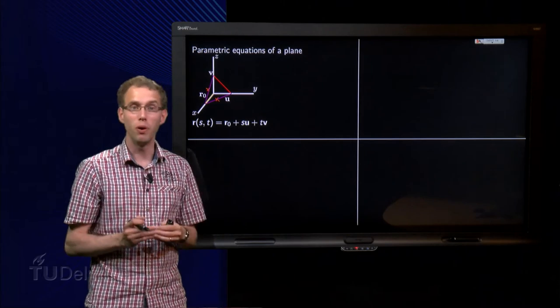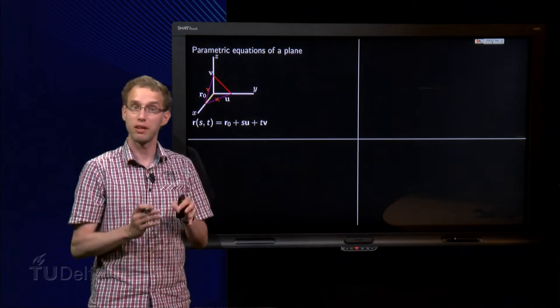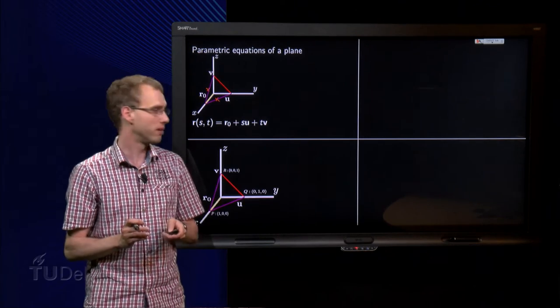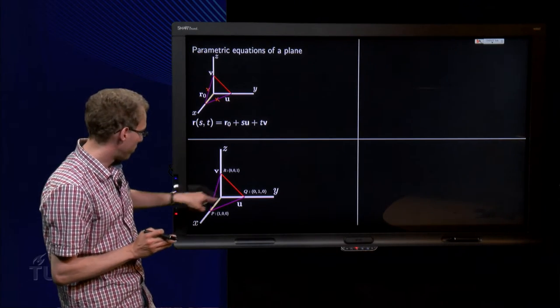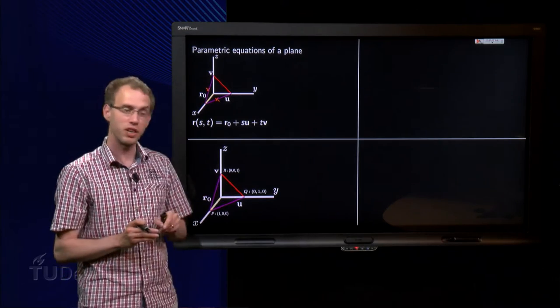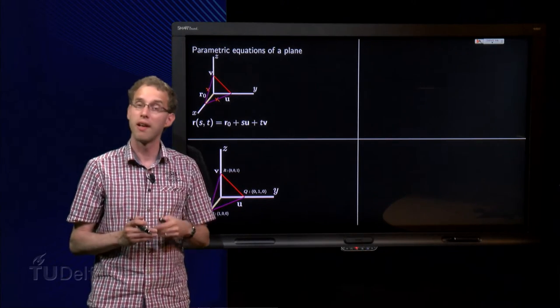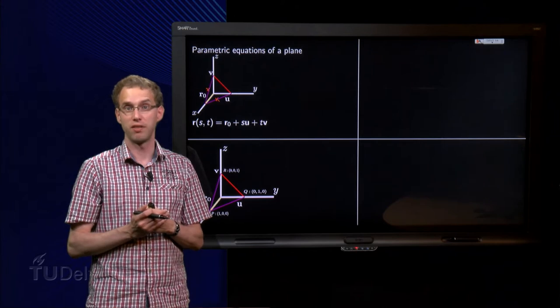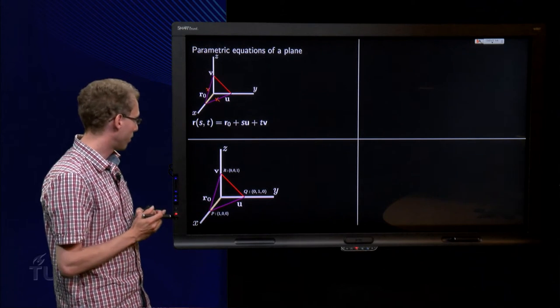How does that work in practice? If you have three points given, how can you find a parametric equation of a plane? So here we have the points P, Q and R. P is 1,0,0, Q is 0,1,0 and R is 0,0,1. How can we find a parametric equation of this plane over here?